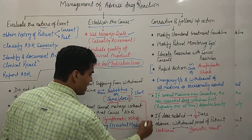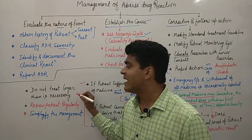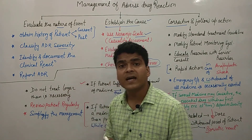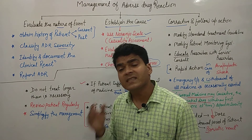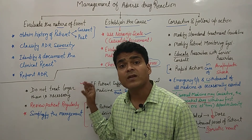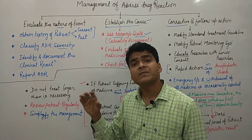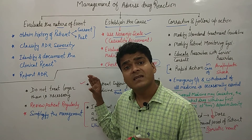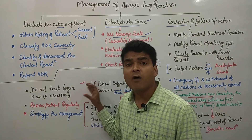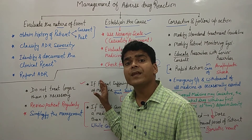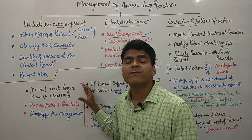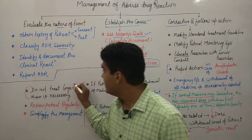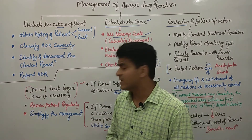Another important point is: do not treat longer than is necessary. The drug which is necessary should be given only for the required time period. For instance, during the COVID-19 pandemic, corticosteroids were given to many patients who did not require such high doses or such long durations, and due to prolonged corticosteroid use, many patients suffered from black fungus.